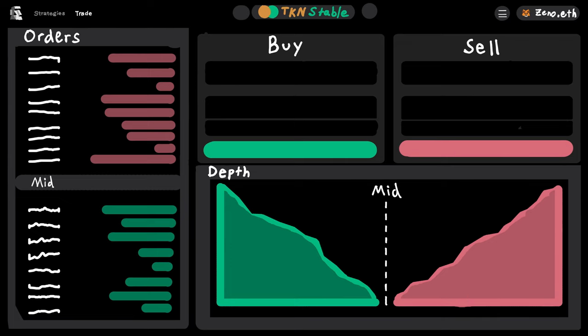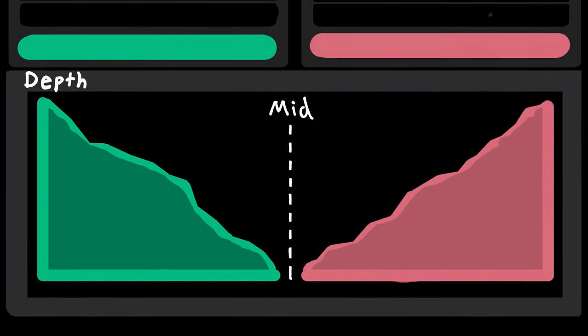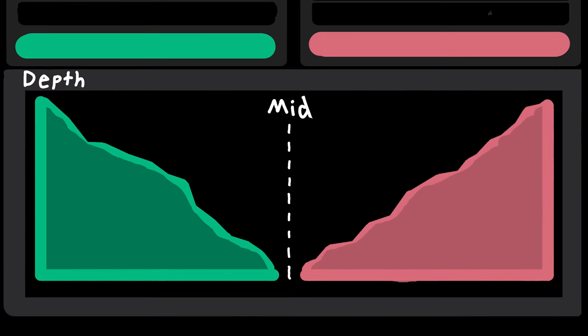When a trader comes to Carbon and takes an order, what happens to that order? This is the depth chart for the TKN stable pair on Carbon. This chart represents all the buy and sell orders that are currently live for your favorite token paired with your favorite stablecoin.